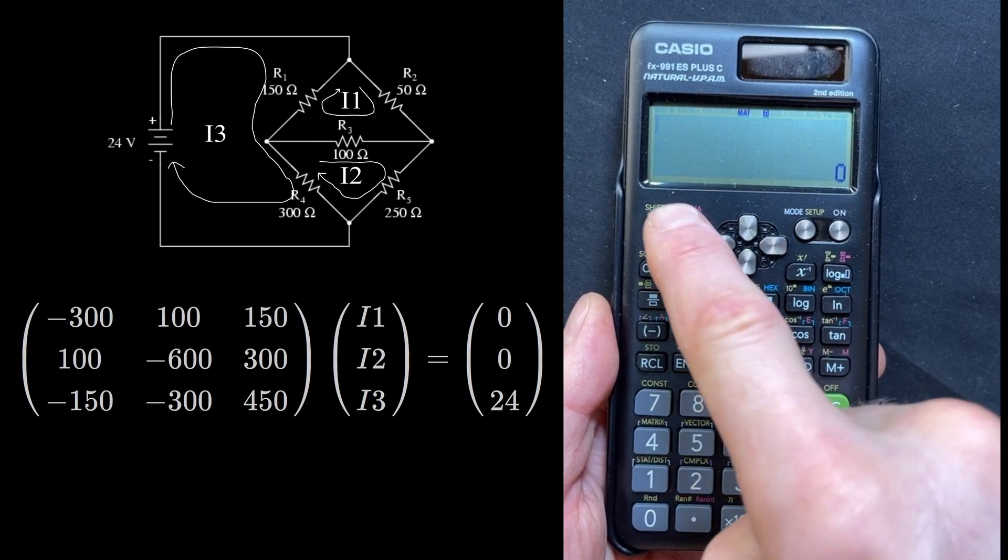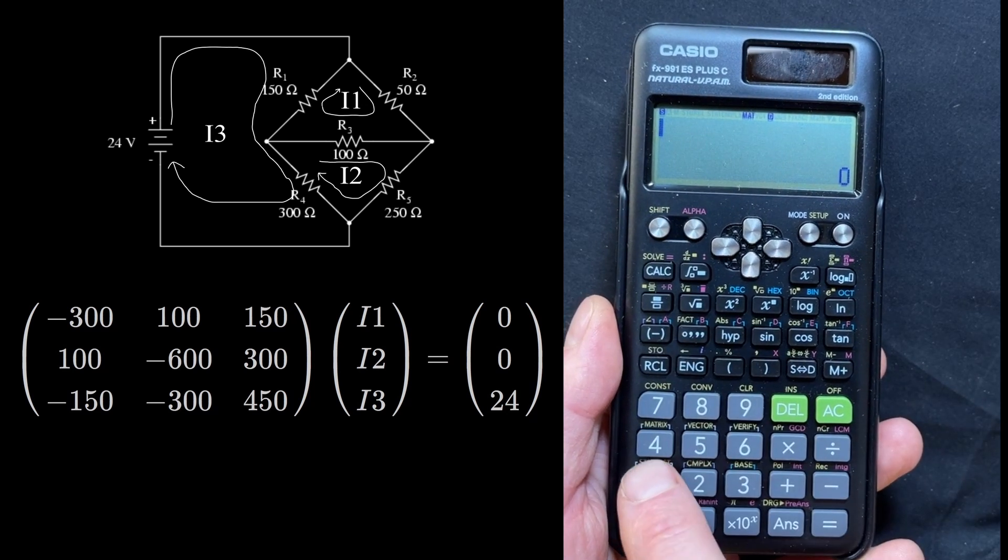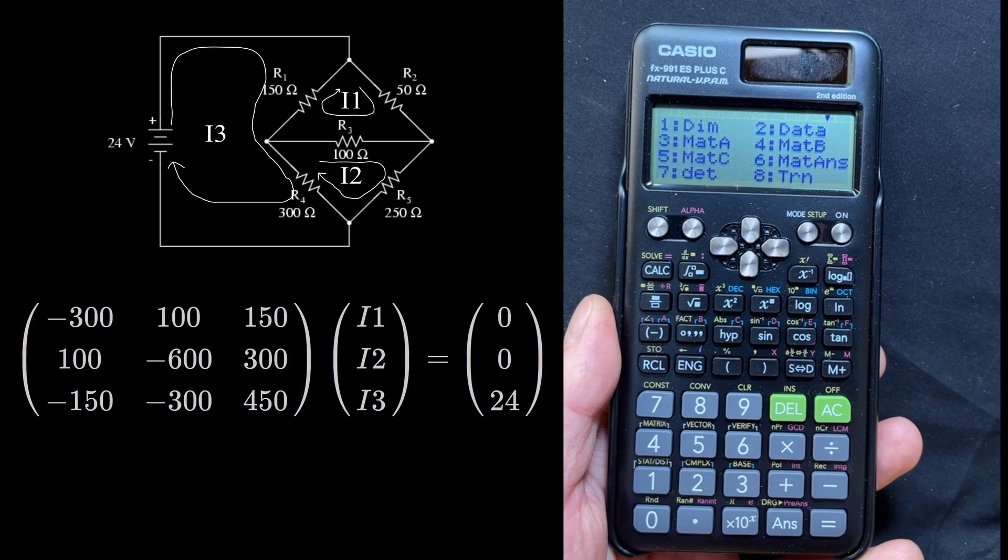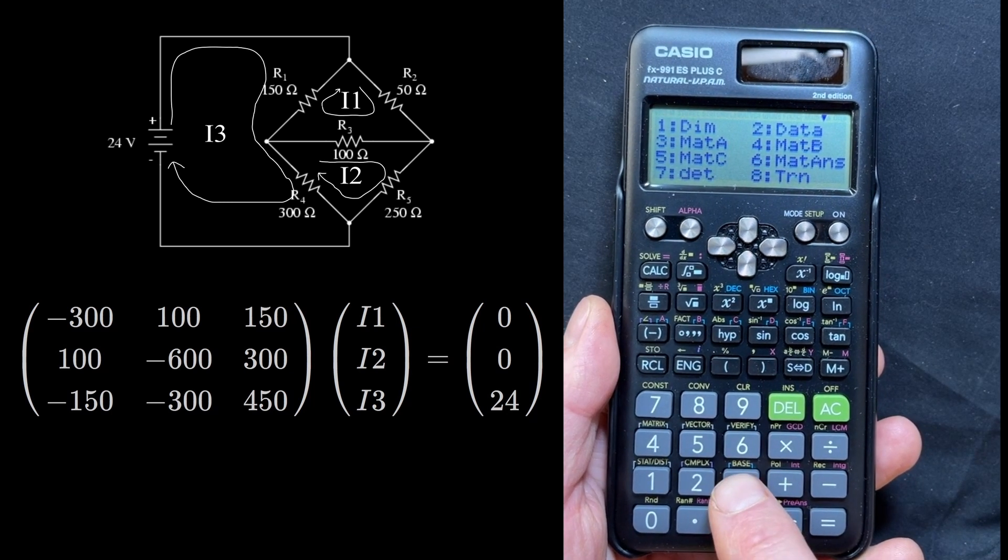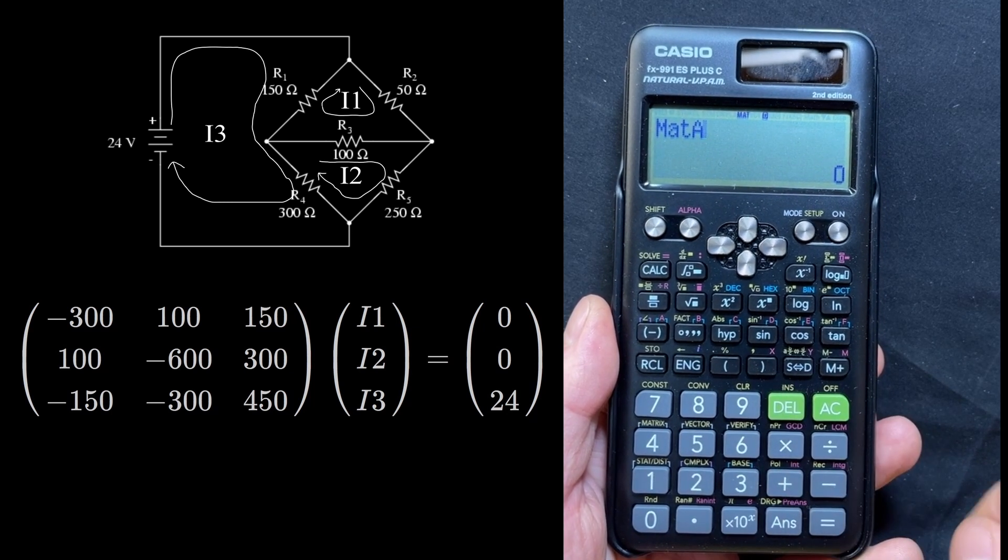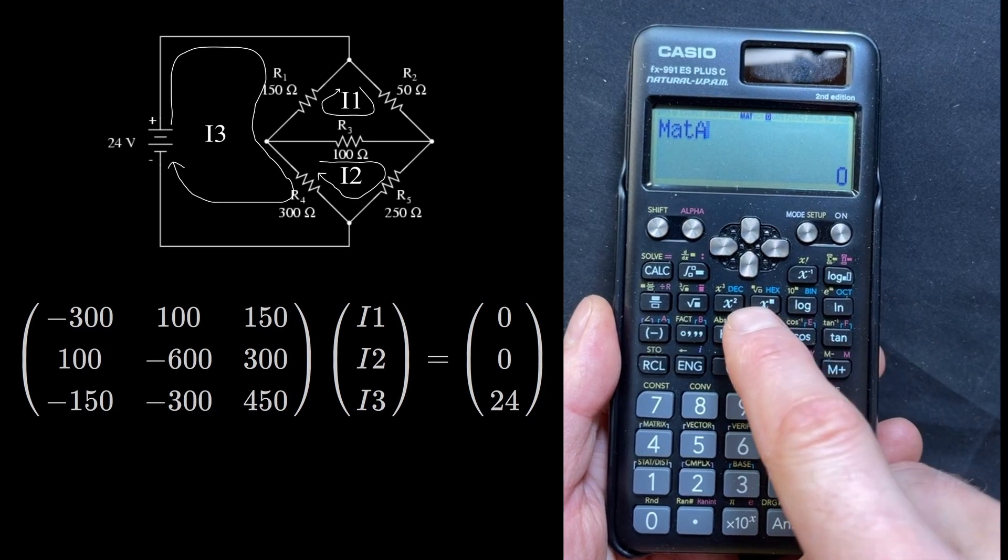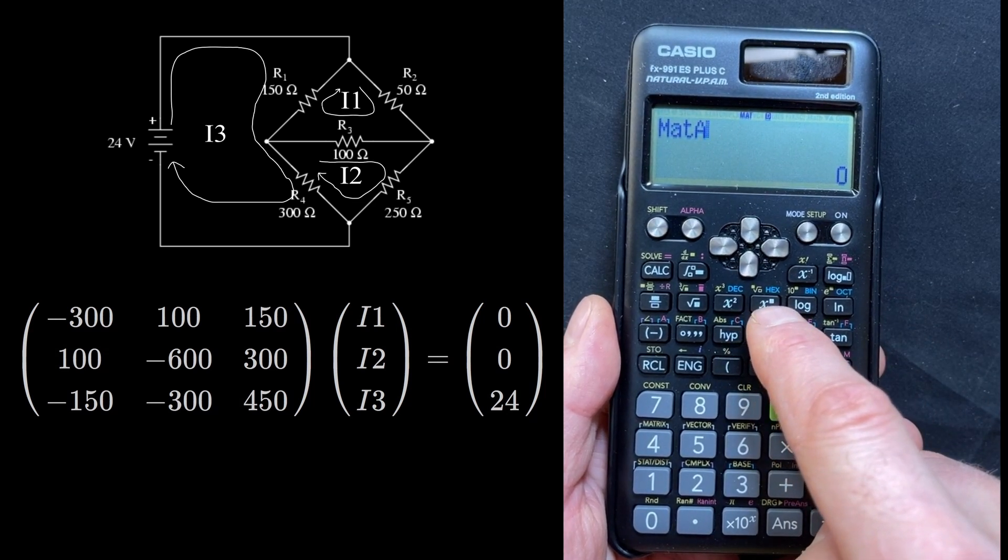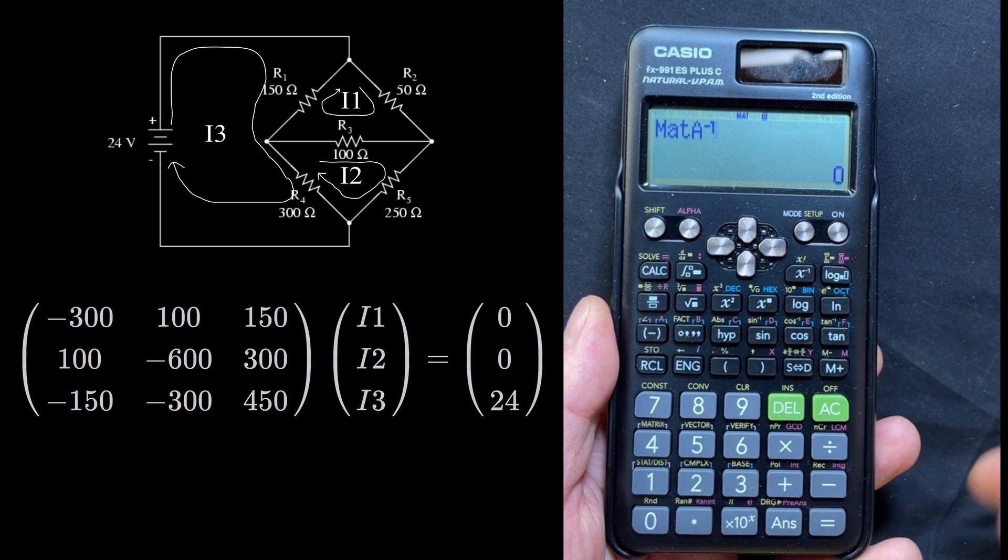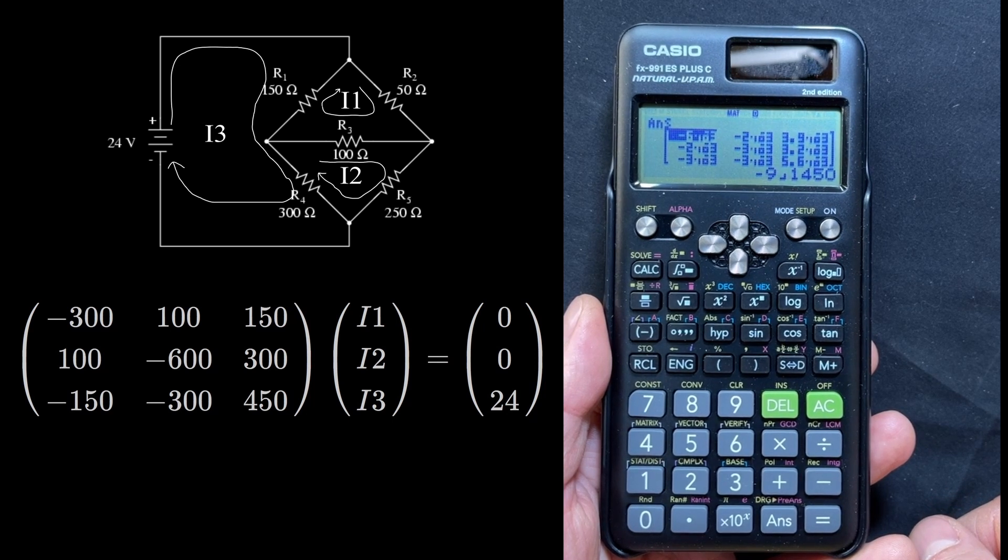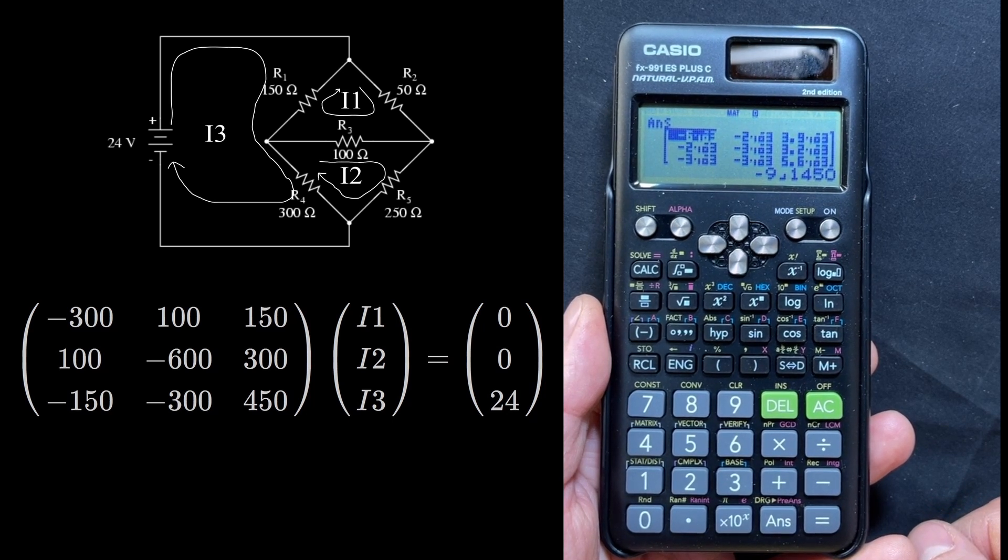So the next thing we can do is we hit shift 4, and that brings us to the matrix menu again. We want matrix A. So matrix A, and we want to take the inverse of it. We need to use the x to the minus 1. We can't do x to the blank and then put in minus 1, we have to do x to the minus 1. So matrix A to the negative 1. Hit enter. And that gives us the inverse of matrix A.